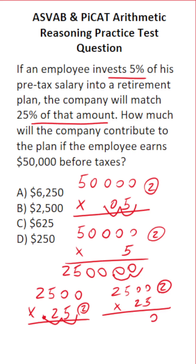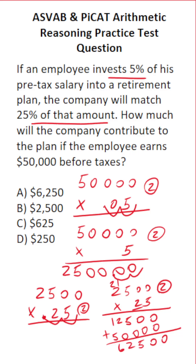0 times 5 is 0, 0 times 5 is 0, 5 times 5 is 25 — bring down a 5, carry a 2. 5 times 2 is 10, plus 2 is 12. Before multiplying with that 2, bring the 0 placeholder. 2 times 0 is 0, 2 times 0 is 0, 2 times 5 is 10 — bring down a 0, carry a 1. 2 times 2 is 4, plus 1 is 5. Adding this all up: 0, 0, 5, 2, 6.